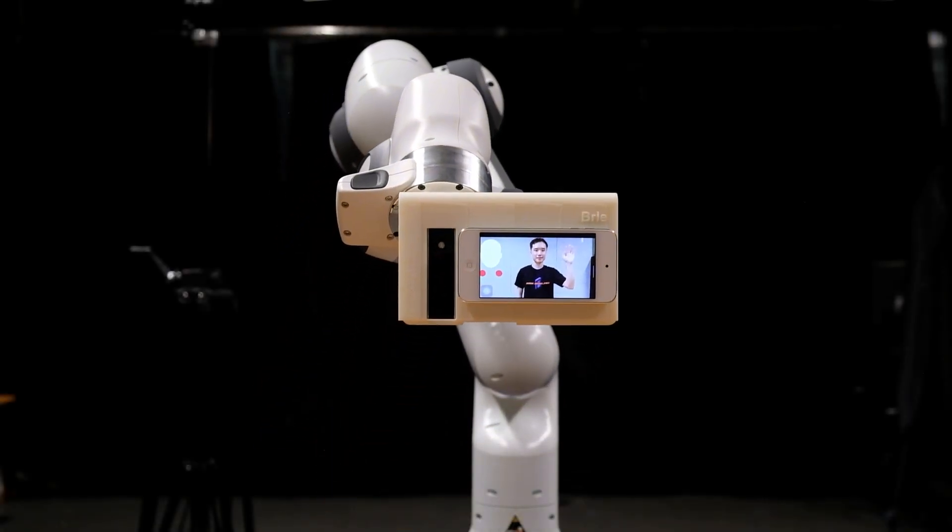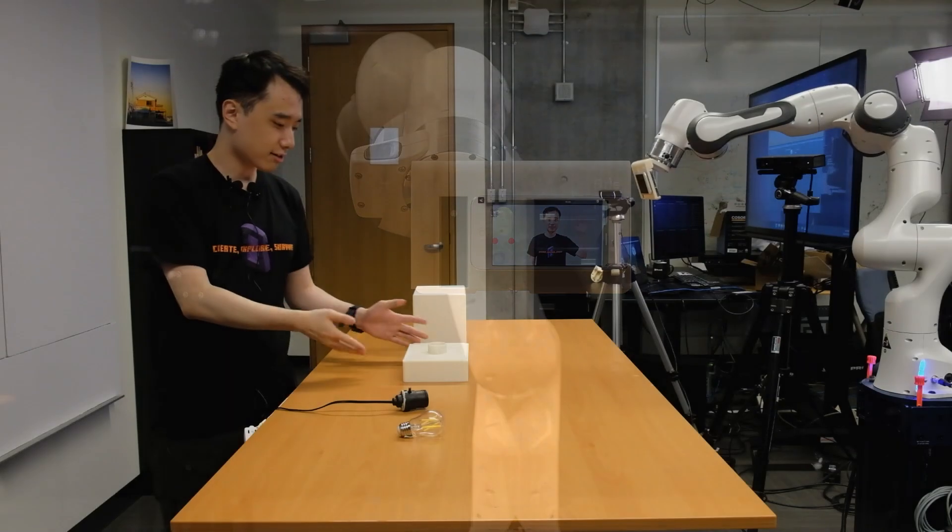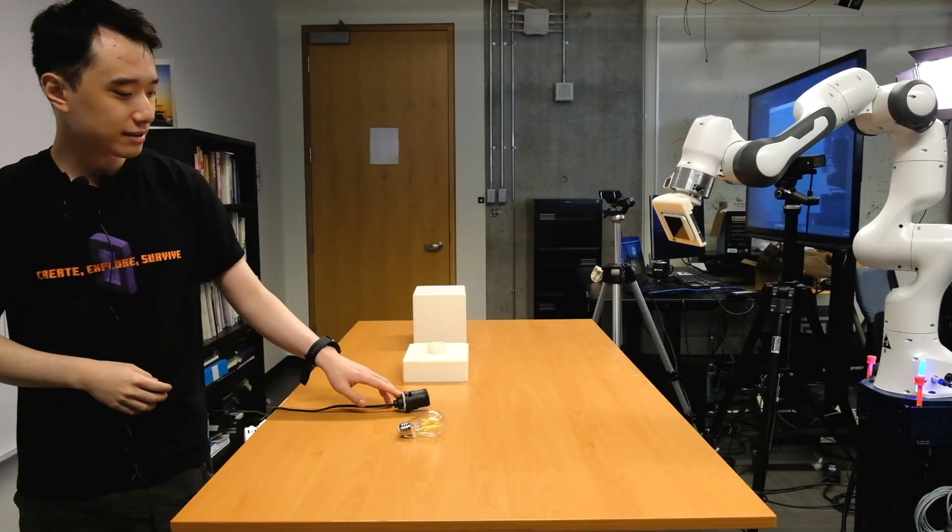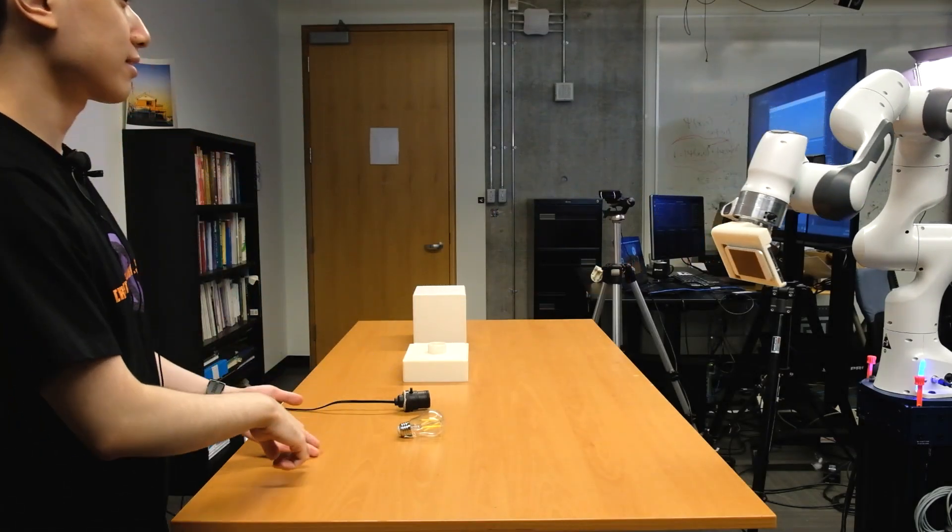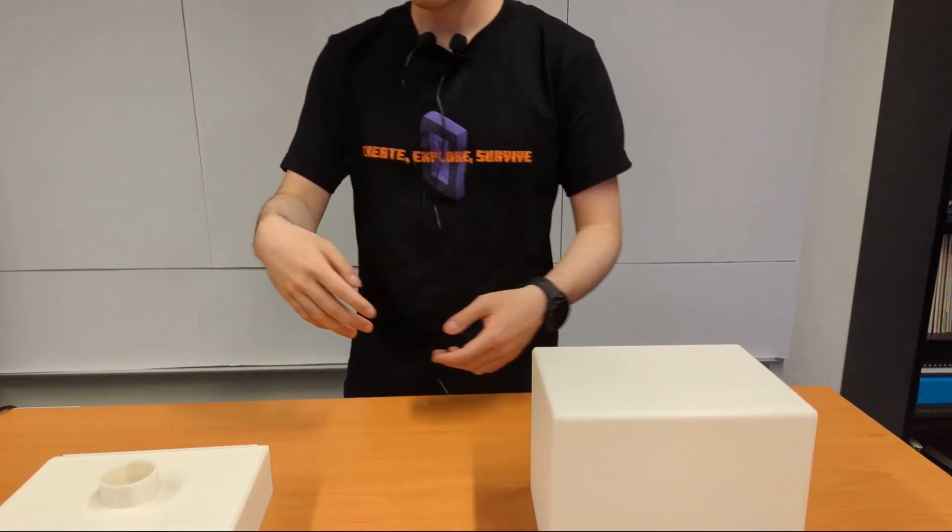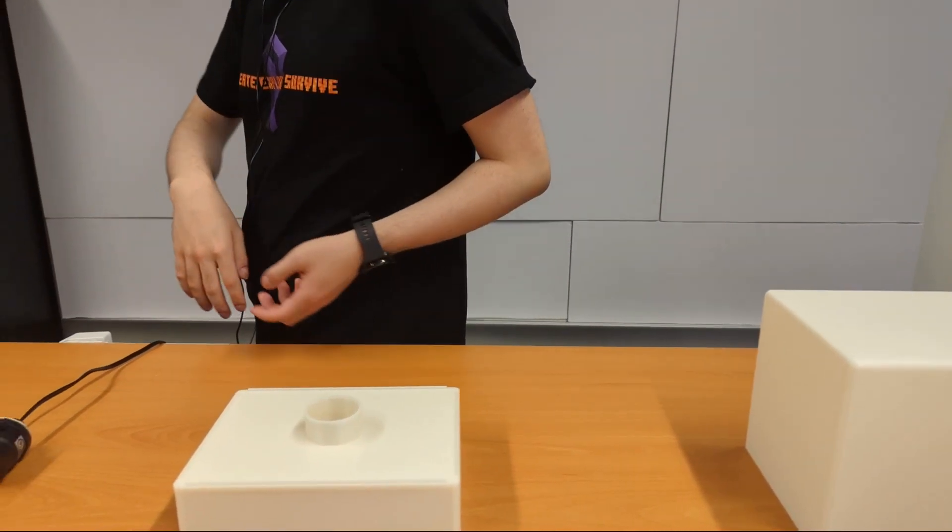Stargazer uses a seven-axis collaborative camera robot that can be safely operated in close proximity to a human instructor. The robot reacts to subtle instructor cues to film dynamic shots.